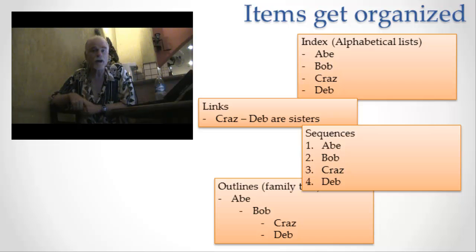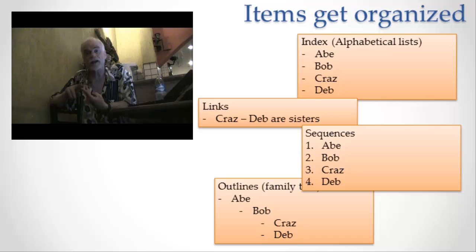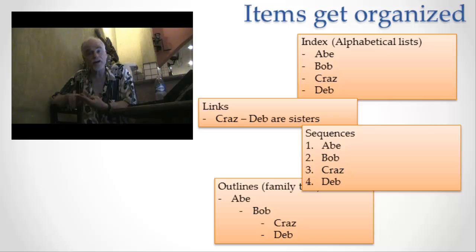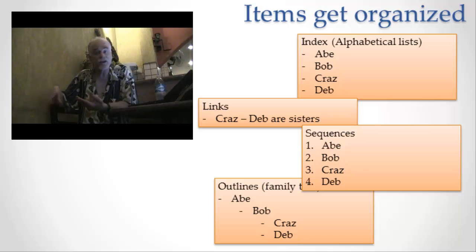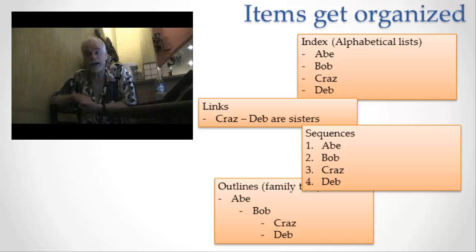The more common and newer way is to alphabetize by first name. At any rate, we're in the third stage of the life cycle of an item of information: it's been created, it's been stored, and now it has to be organized. The first major way to organize it is alphabetically or numerically — for example, I can organize by age or birthday. That would be a numeric organization. That's called an index.